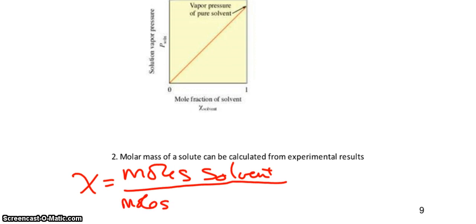And molar mass of the solute can be calculated from experimental results if you remember what the chi is. Chi is the moles, in this case, of the solute over, I'm sorry, moles of the solvent over the total number of moles. So if you know the moles of the solute, you can probably calculate the molar mass if you know how many grams you started out with.